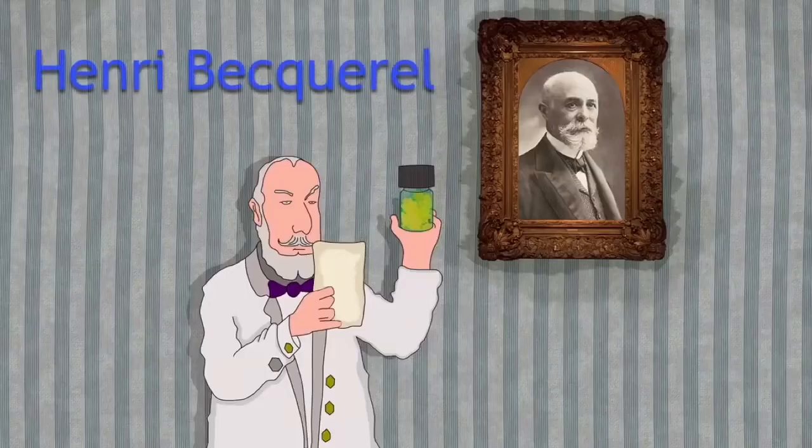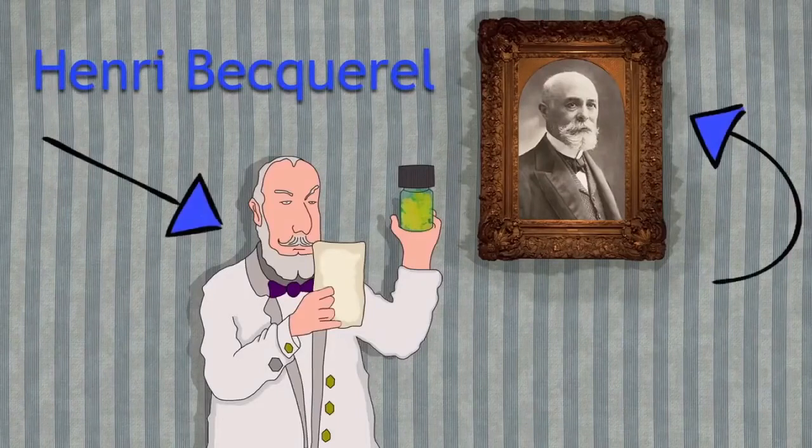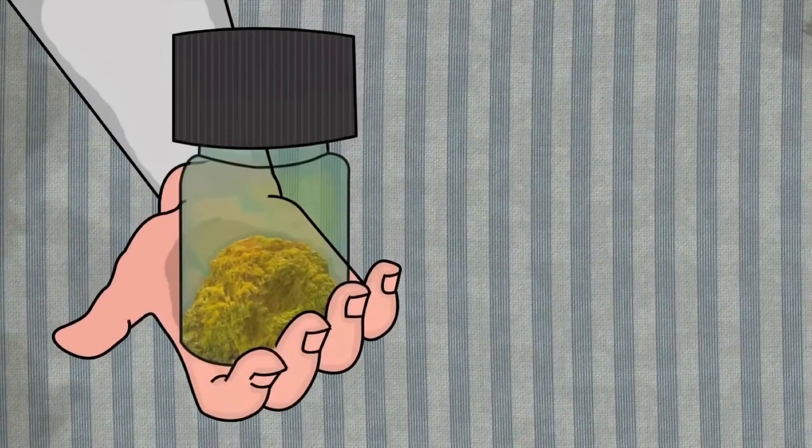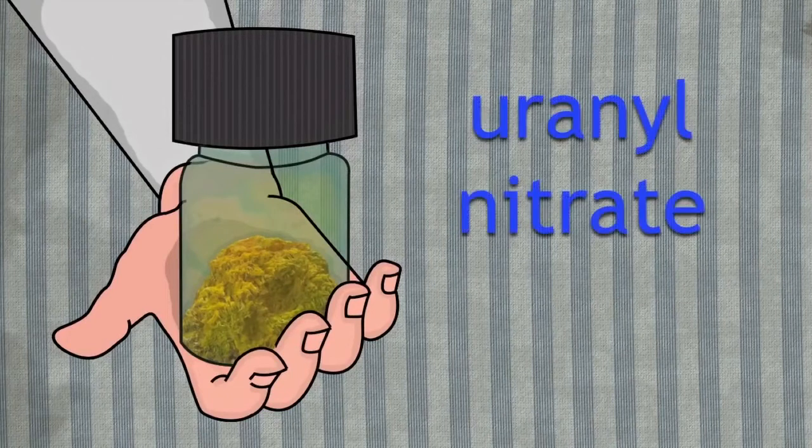In 1895, Henri Becquerel, he's the man with the moustache, discovered that rocks of uranium affected photographic paper. This is the rock of uranium that he looked at, and it's called uranyl nitrate.